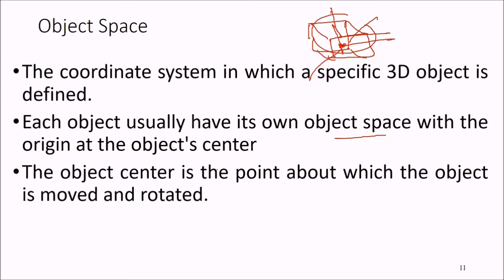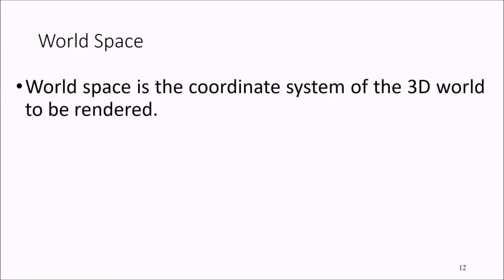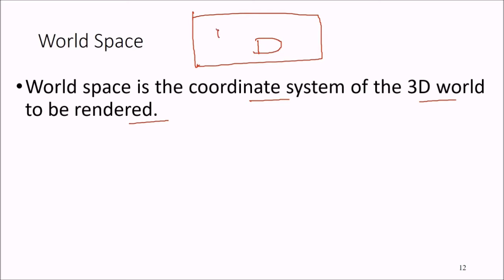The object center is the point about which the object is moved, rotated, or translated. Then we come to world space — the coordinate system of the complete 3D world to be rendered, not only individual models.